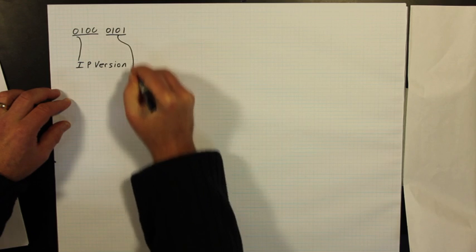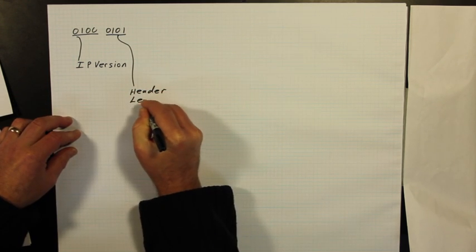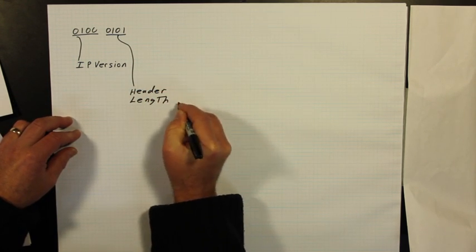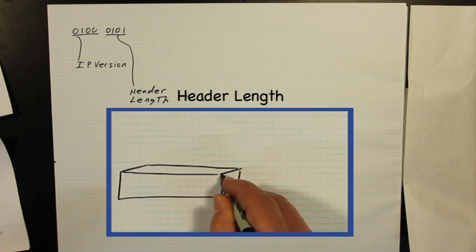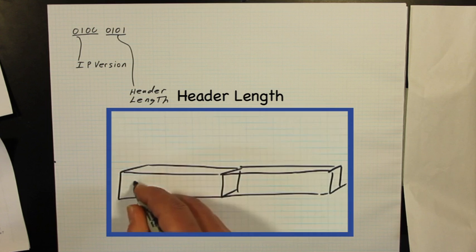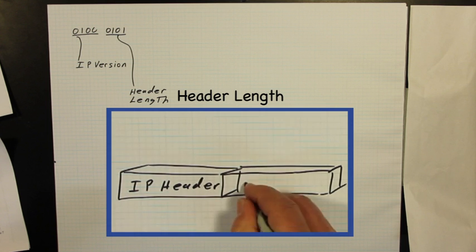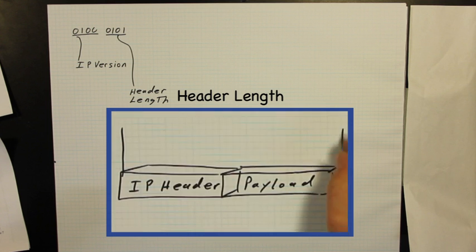The next four bits describe the length of the IP header in 32-bit words. The entire header is made up of a minimum of five 32-bit words. When the length of the header is known, you know where the beginning of the payload is.